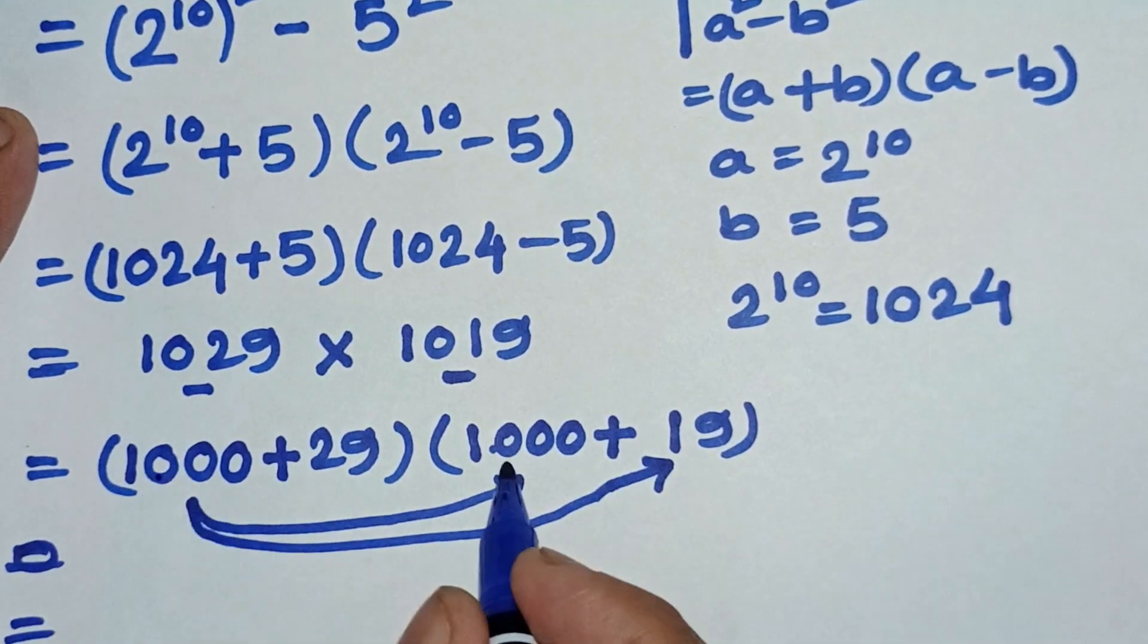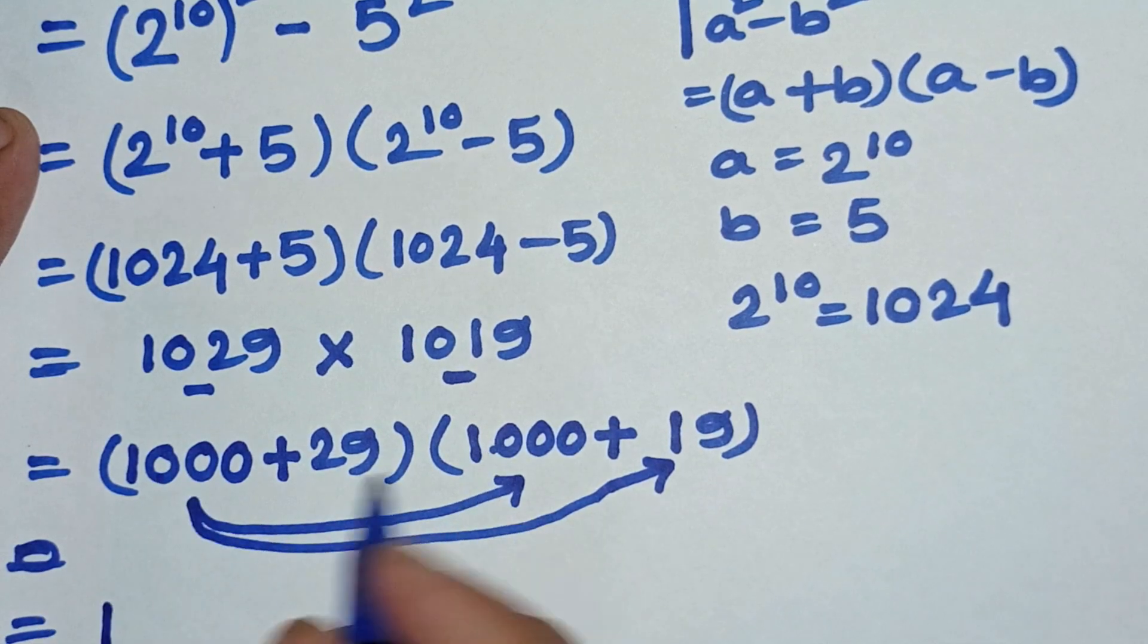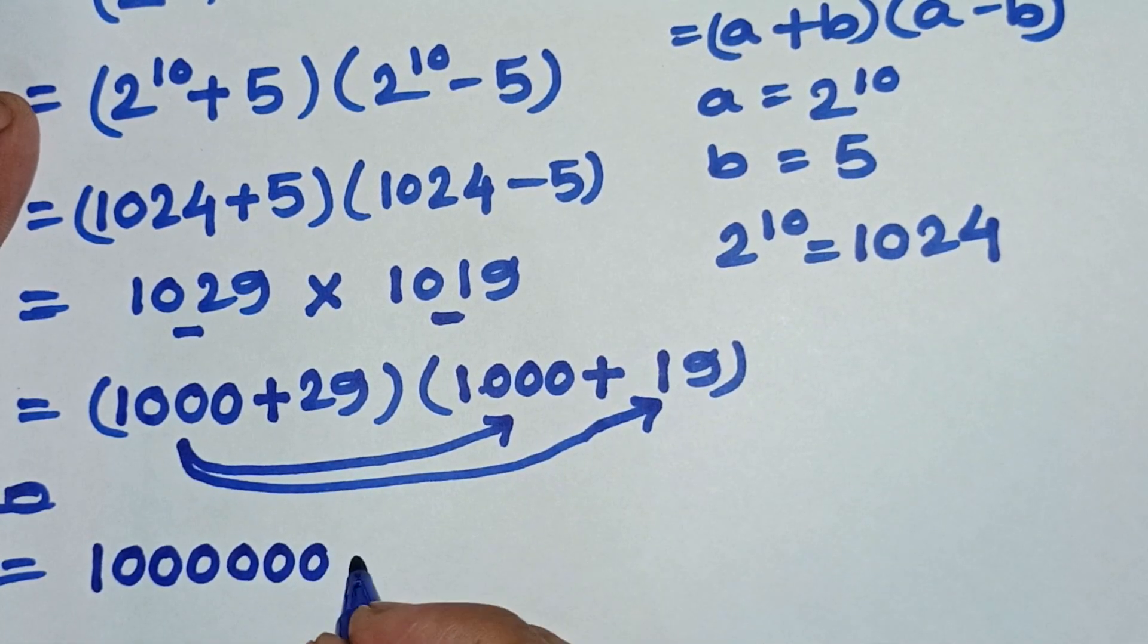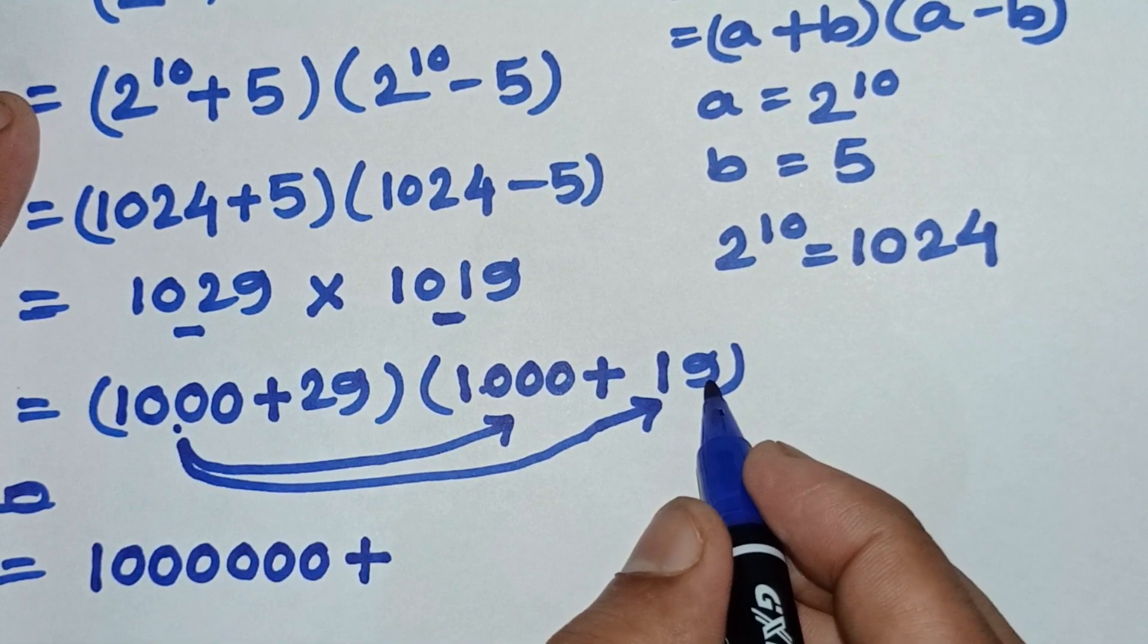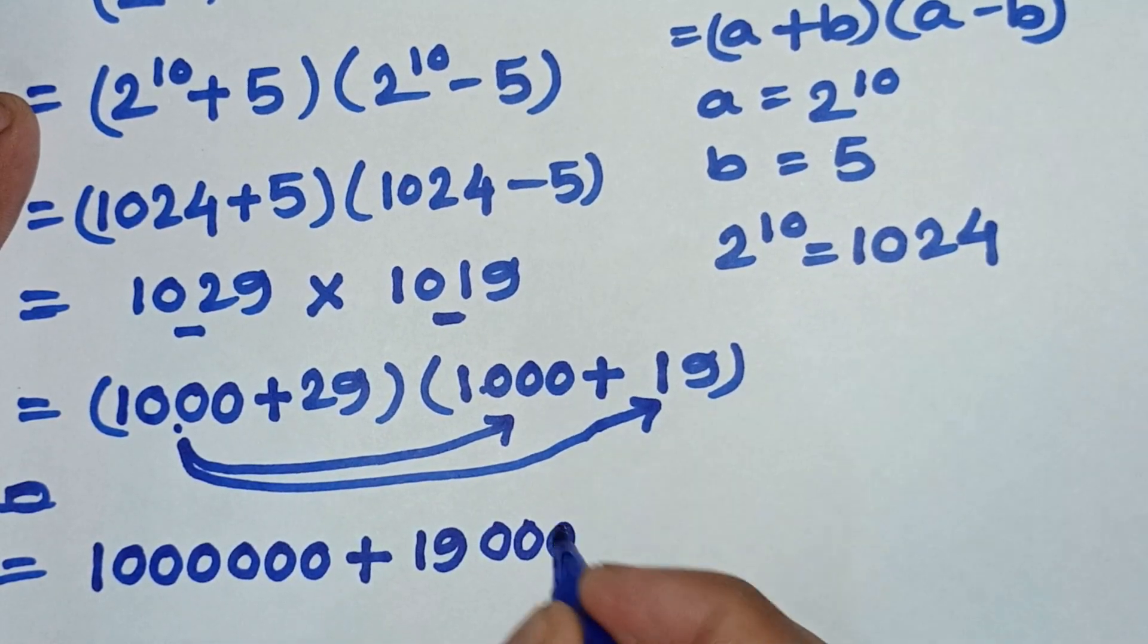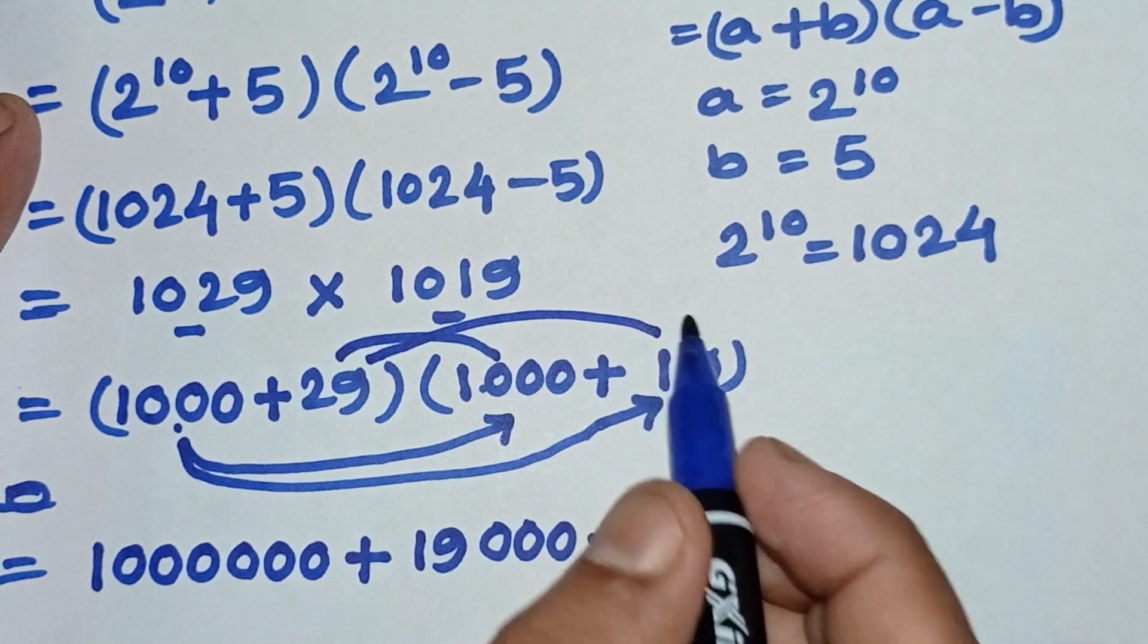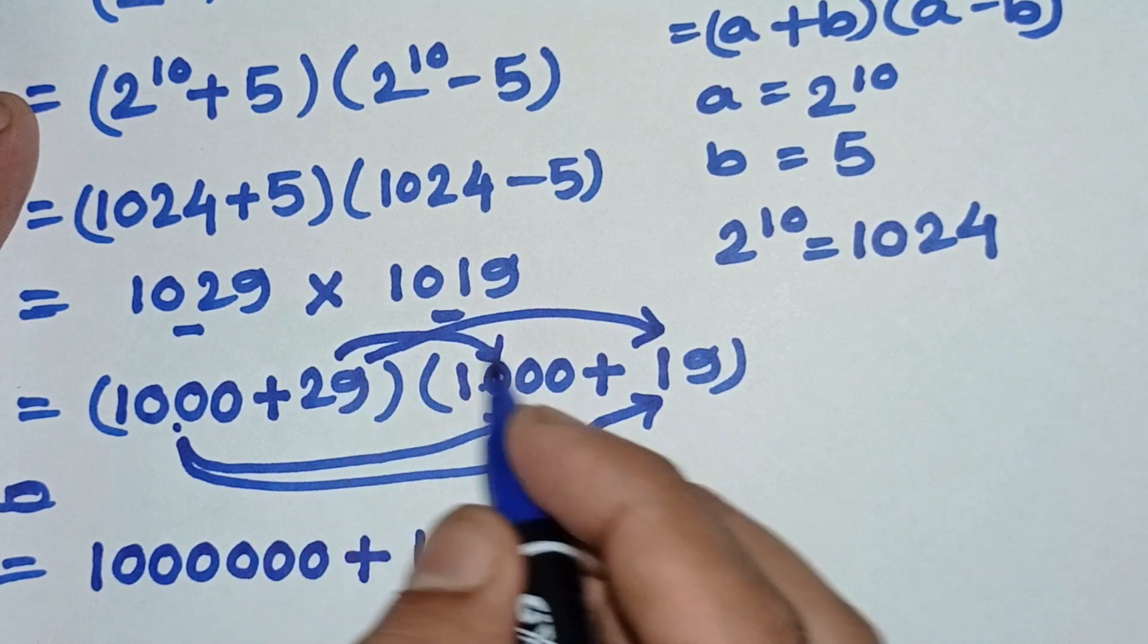1000 and 1000 is three zero, three zero, total six zeros. Plus 1000 into 19 is 19 with three zeros. Plus now we can multiply this and this. 1000 into 29 is 29 with three zeros.